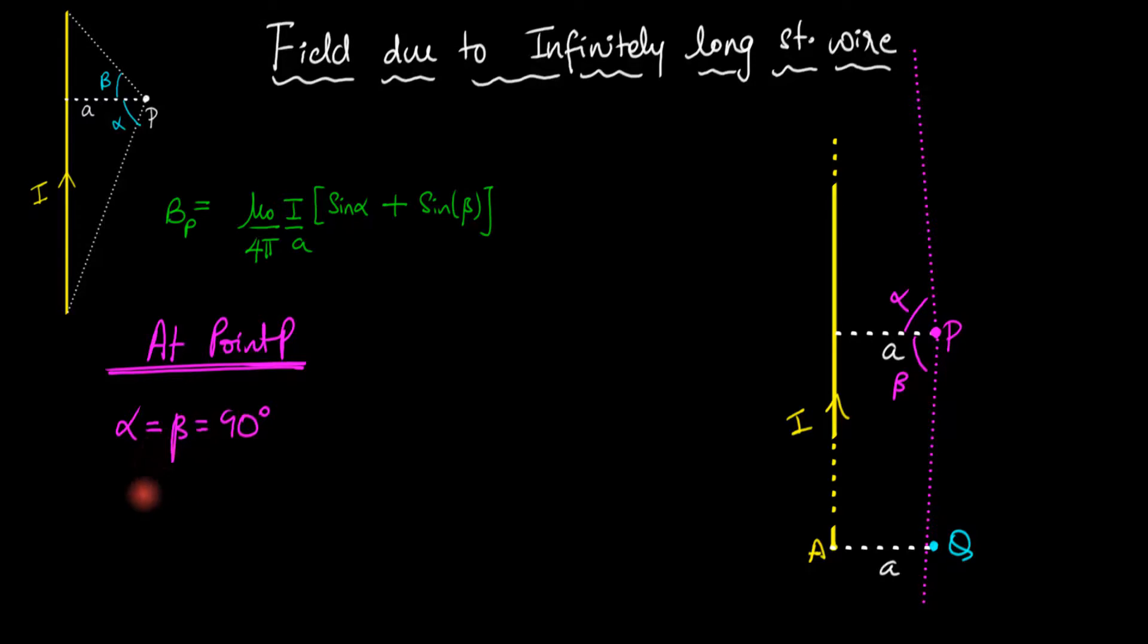And for that reason we can now approximate this as pretty much equal to μ₀ divided by 4π times i divided by a times sine 90 plus sine 90.